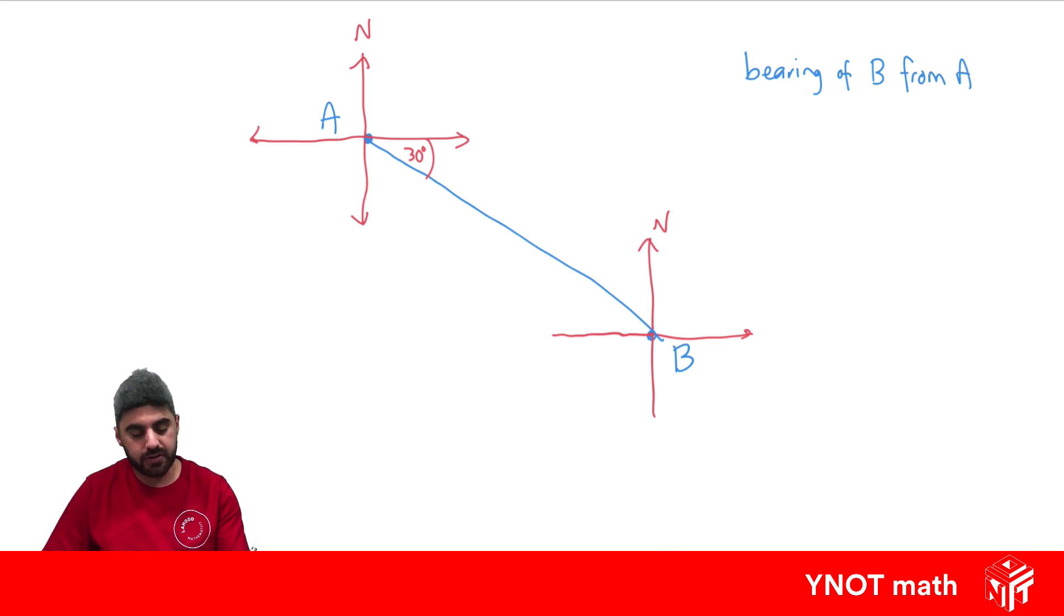Until we get to the line that joins the two points. So we start at north, measure in a clockwise direction until we get to the line that joins the two points, and that angle is the bearing. We know this angle is 90, and our bearing of B from A just becomes 90 plus 30, which is going to be 120. It's three figures, so we don't have to add any zeros before.